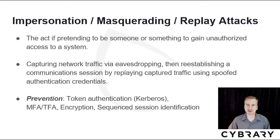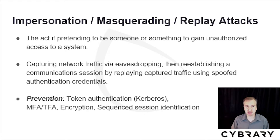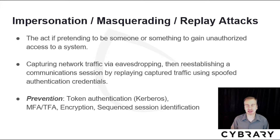There are other types of attacks to be aware of, such as impersonating, masquerading, and relay attacks. Impersonation is the act of pretending to be someone to gain unauthorized access to a system. Prevention against these attacks includes token authentication such as Kerberos, multi-factor and two-factor authentication, encryption, and sequenced session identification.